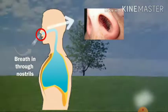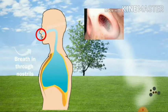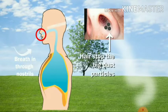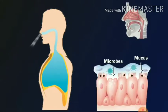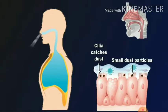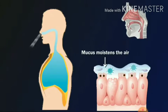We breathe through nostrils — there are two nostrils in our nose. As you can see in the figure, air with some dust particles enters through our nose, and the hairs stop the large dust particles. That's why we get sneezing. These particles, along with many microbes, mucus, and other things, are caught by the dust particles.